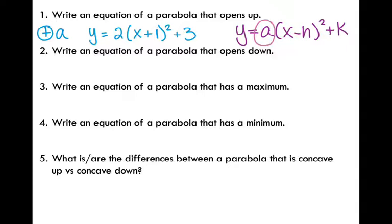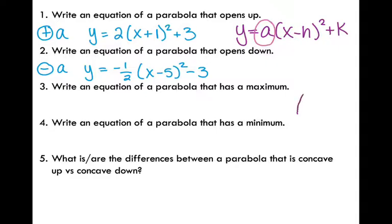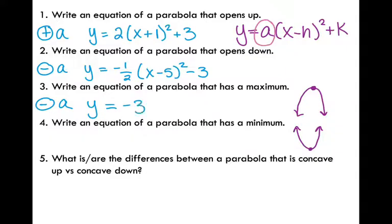Similarly, a parabola that opens down is going to have a negative a, so I can write whatever equation I want as long as my a is negative. Parabolas that have a maximum — your maximum represents your vertex and is going to be the highest point on your parabola. So if I have a maximum, that means my parabola is opening down. And if I have a minimum, that means my parabola is opening up. Using the same ideas as questions one and two, a parabola that has a maximum is going to have a negative value for a, since that parabola needs to open down. So I'll pick my a, make it negative, and choose whatever I want for my vertex.